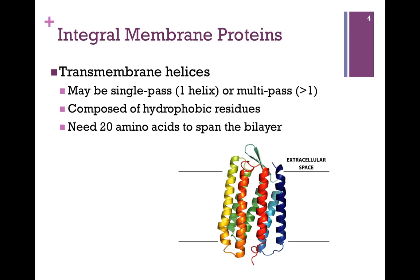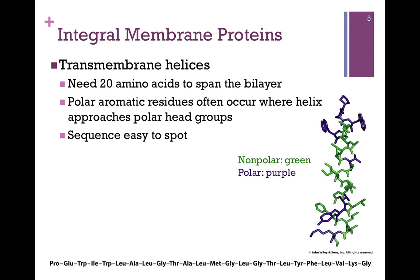In order to pass through the membrane, we need about 20 amino acids — a string of 20 hydrophobic amino acids to span that bilayer. In our illustration on the far right, non-polar residues are indicated in green, representing the transmembrane portion, which is mostly hydrophobic. Polar residues are shown in purple, interacting with the polar head groups on either side of the membrane. In the primary sequence, it's pretty easy to spot a transmembrane helix because we'll see a series of 20 hydrophobic residues in a row, along with polar aromatic residues at either end of that helix.